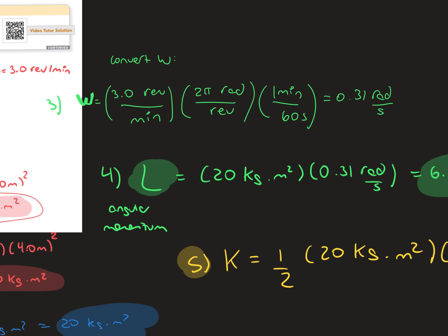To find the angular momentum, we first have to convert the angular velocity from revolutions to radians. We cancel out the revolutions and minutes, and we get 0.31 radians per second.